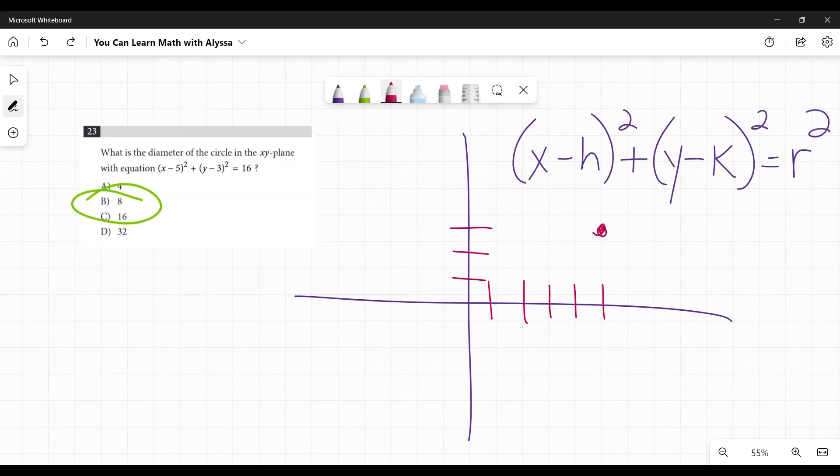And this is the radius squared. So the radius is 4: 1, 2, 3, 4. So it's going to be like that. A circle with something like that is what that equation represents.